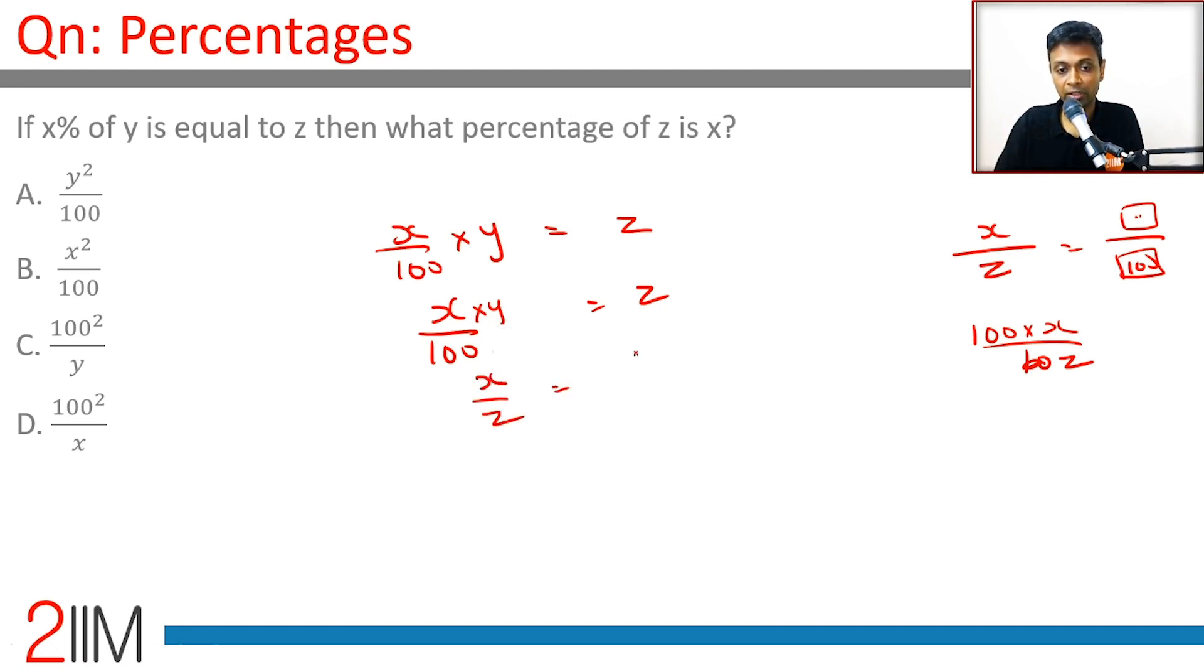x by z is 100 by y. What is 100x by z? It is 100 into 100 by y. 100 square by y. Luckily enough we have that choice. x% of y is x by 100 times y. That is z.